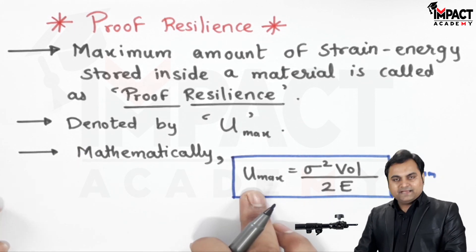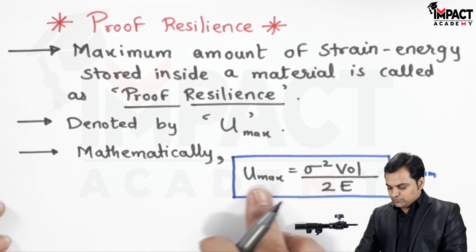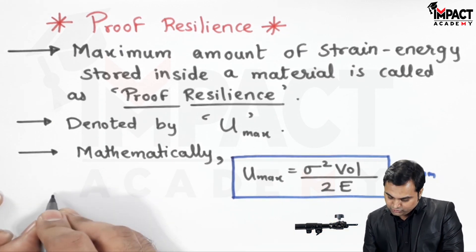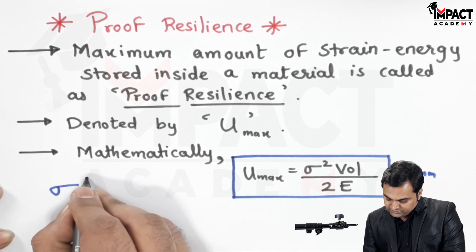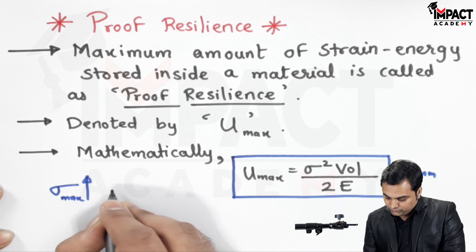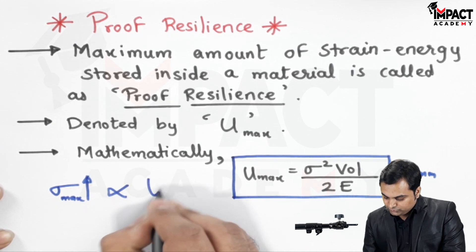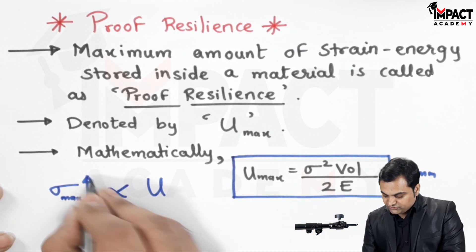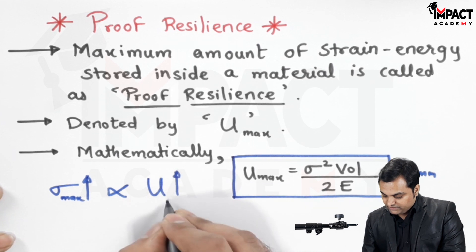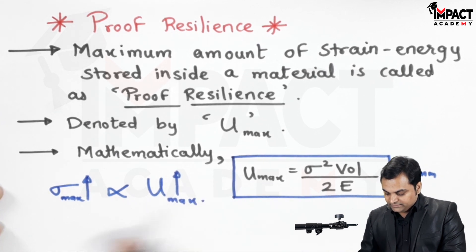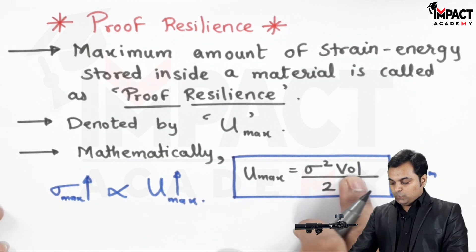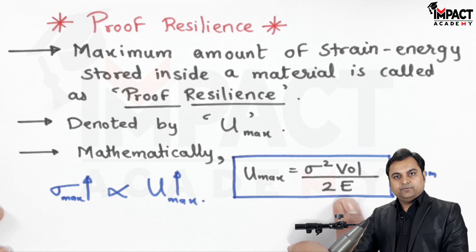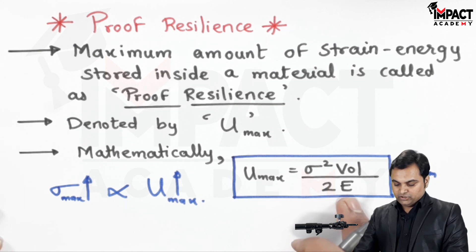U max, the strain energy, is directly proportional to stress. So if stress increases or reaches a maximum value, the strain energy is also at its maximum. When stress is maximum, strain energy is maximum — that is the maximum condition. The formula also involves the volume of the material and the modulus of elasticity.